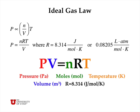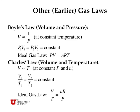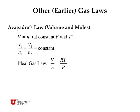Boyle's law is an earlier gas law that related volume and pressure. It states that P times V is a constant, which comes out of the ideal gas law when the number of moles and temperature are held constant. Charles' law related volume and temperature — V over T is a constant at constant N and P. Similarly, Avogadro's law, which related the volume of gas to the number of moles, says V over N is a constant at constant P and T. All of these are consistent with the ideal gas law.